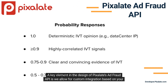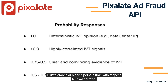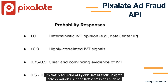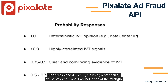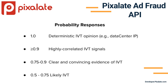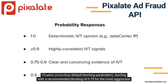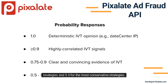A key element in the design of Pixelate's AdFraud API is that we allow for custom integration based on your risk tolerance at a given point in time with respect to invalid traffic. Pixelate's AdFraud API yields invalid traffic insights across various user and traffic attributes, returning a probability value between 0 and 1 as an indication of the strength of the particular endpoint assessed. Pixelate prescribes default blocking parameters, starting with a recommended blocking threshold of 0.75 for the most aggressive strategies and 0.5 for the most conservative strategies.